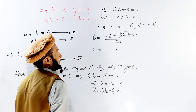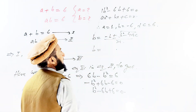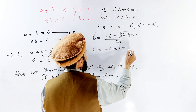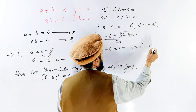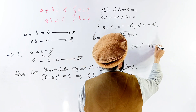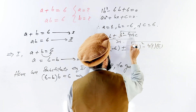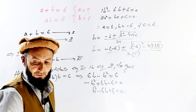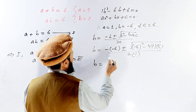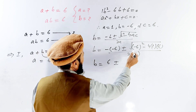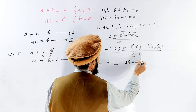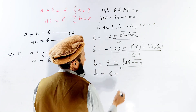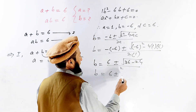Now we substitute the values into the quadratic formula. Minus b is equal to 6, plus or minus the square root of minus 6 whole squared minus 4 times 1 times 6, divided by 2 times 1. This simplifies to 6 plus or minus the square root of 36 minus 24, divided by 2.